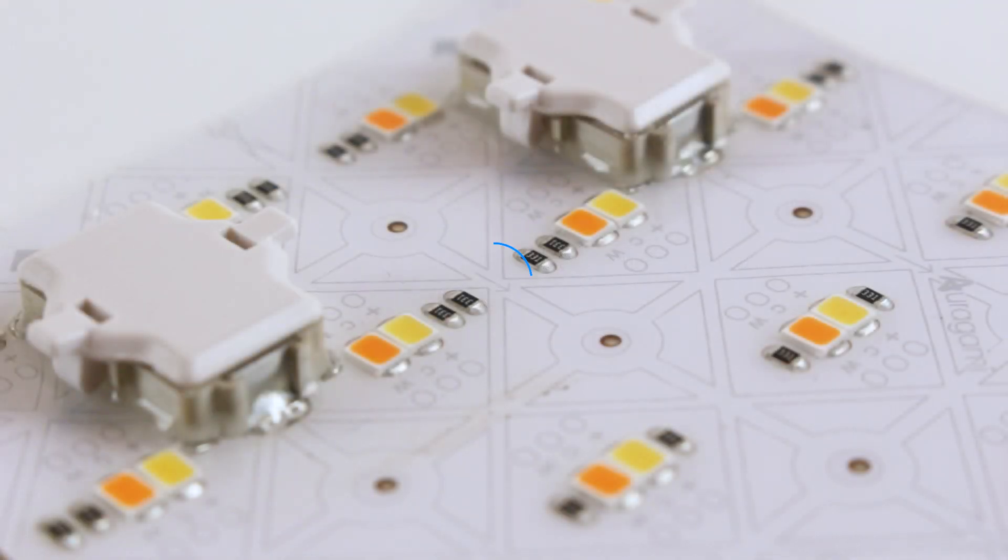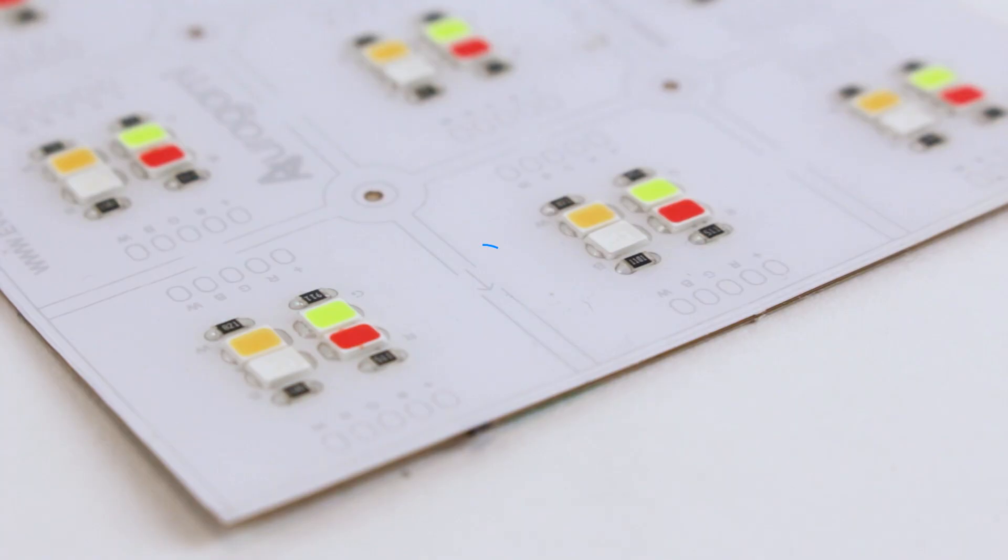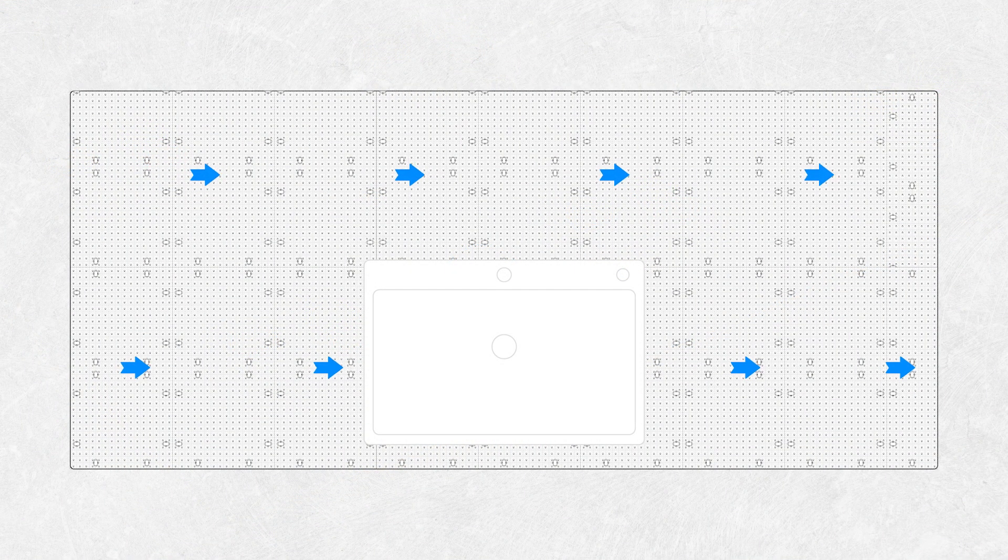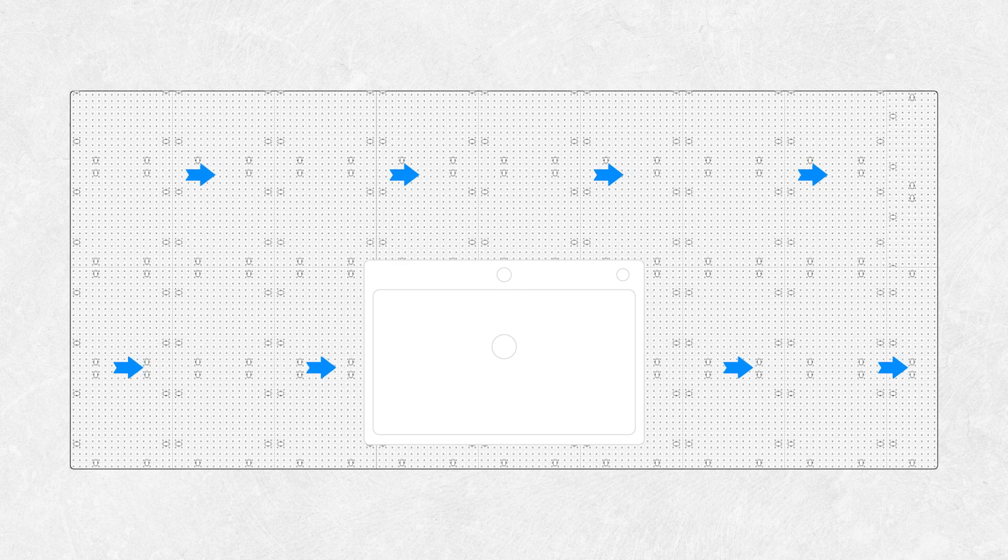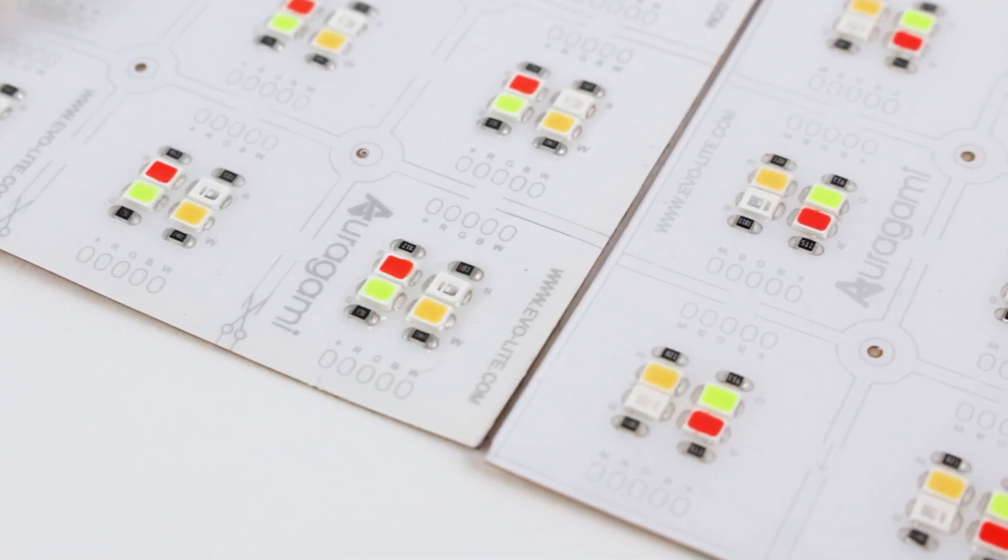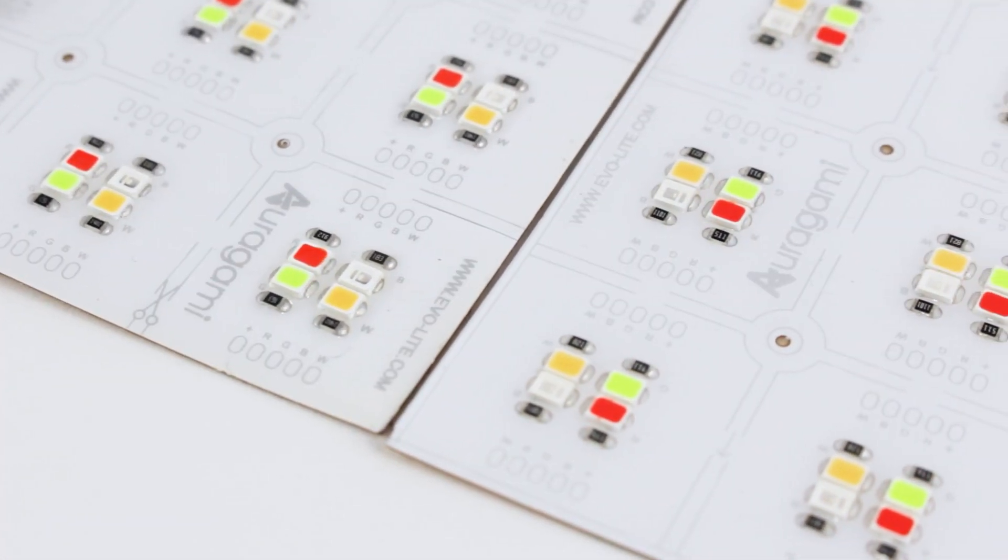Tunable white and RGBW lightsheets have orientation arrows printed on them. Install contiguous sheets with all of these arrows pointing in the same direction. Failure to orient these lightsheets consistently will cause adverse color effects.